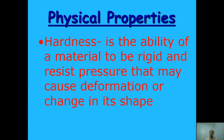Here are the common physical properties of matter. First is hardness. Hardness is the ability of a material to be rigid and resist pressure that may cause deformation or change in its shape. Hard materials like metal and wood can be used to construct buildings, bridges, or other infrastructure. That's what we call the physical property of hardness.